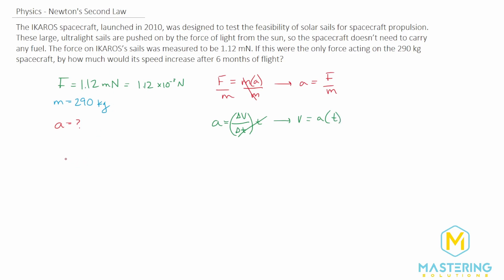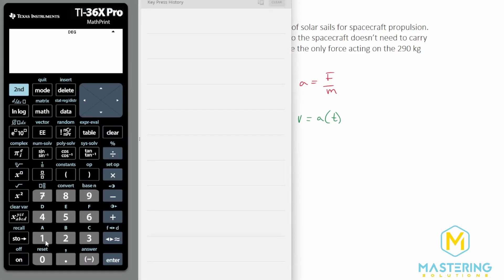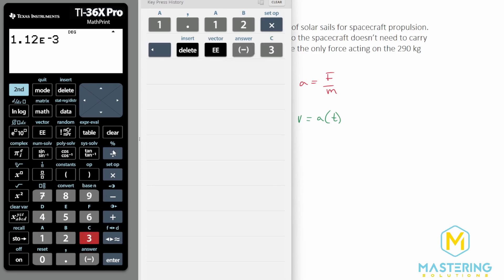So to first find the acceleration, we already have our equation that we need, and everything is in standard units. So we have 1.12 times 10 to the negative 3 newtons divided by 290 kilograms. So we have 1.12 times 10 to the negative 3, and that's divided by 290.